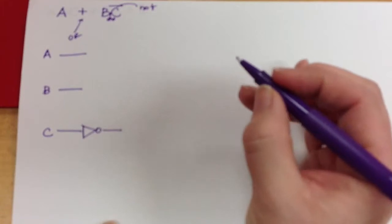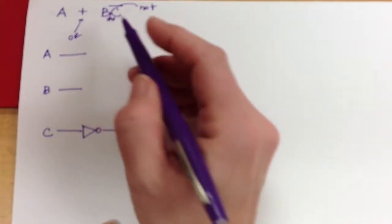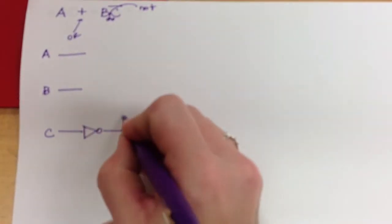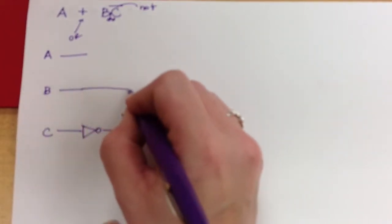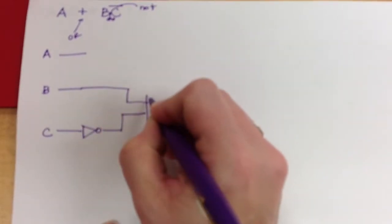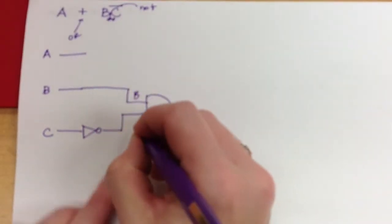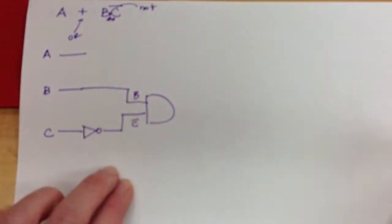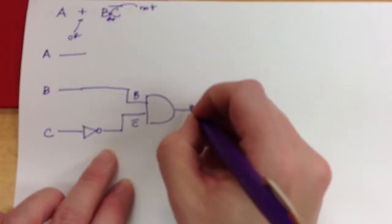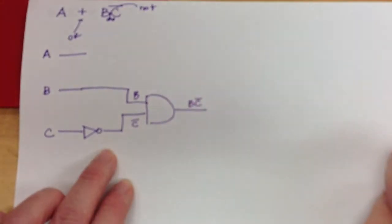And now from there, I have to combine not C with B and an and gate. So we can do that. This is B. This is not C. And so the output from this is B and not C.